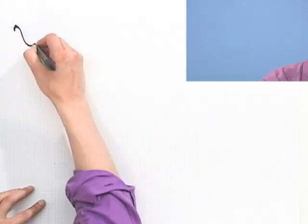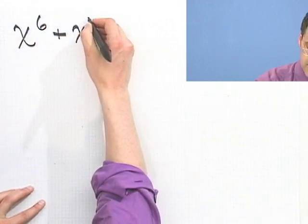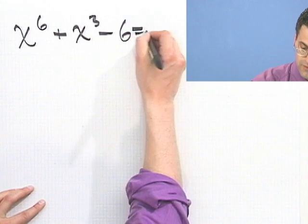Okay, I think I have time to at least start one more with you. How about this one? x to the sixth plus x cubed minus 6 equals 0. Let me have you try this one really fast, see if you can make any headway on it.